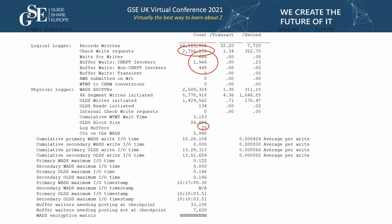Log buffers: 20 log buffers. OLDS block size: 26,624. Buffers waiting that needed checkpointing at checkpoint: 33,000. The average IO wait time is 424 milliseconds — I would expect closer to half of that from hardware response times, so these appear a little high. I've identified red circles and a yellow circle on the report. Let's talk about the reds first.